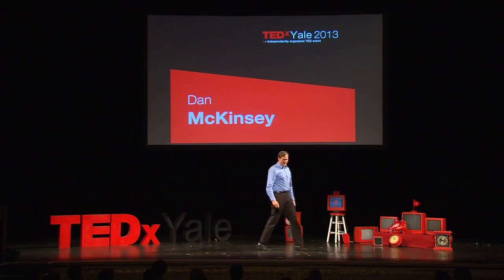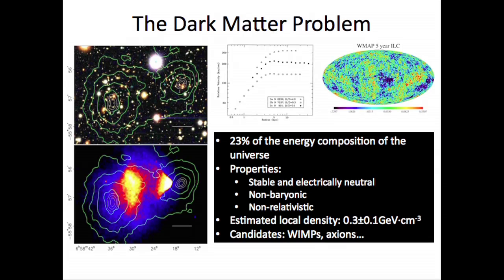I'll be telling you about dark matter and an experiment that we've built to detect dark matter particles. Dark matter is this gravitating stuff that's filling the universe. It's a major part of our galaxy, and it doesn't emit light, it doesn't absorb light. But there's a huge amount of it, gravitationally speaking. There's just a lot of dark matter, and we don't know what it is.